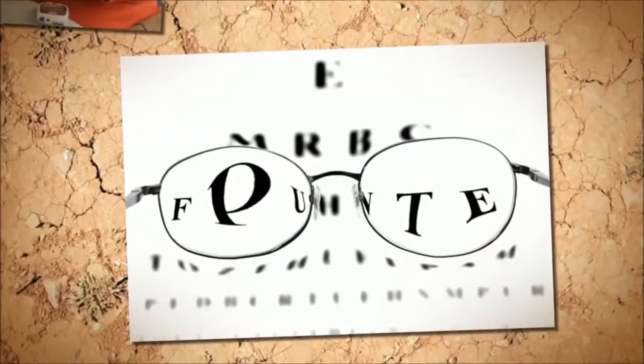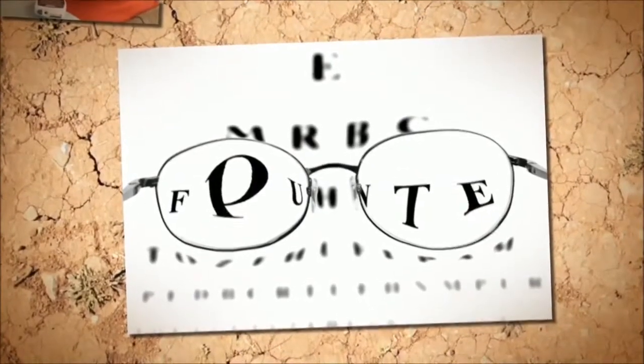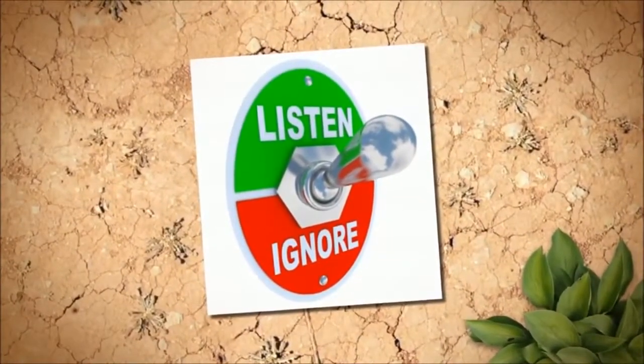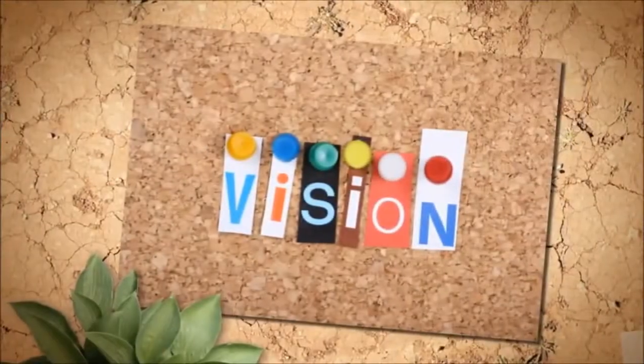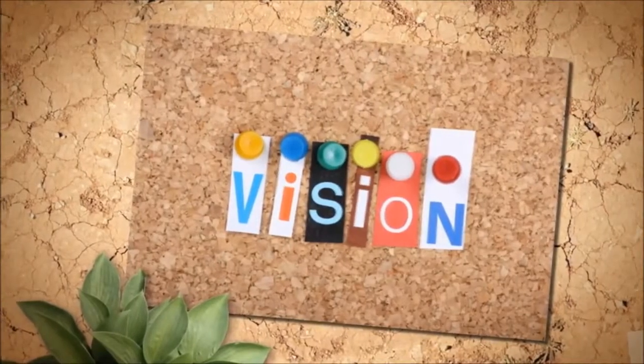The diabetes blurry vision symptom is one of ten symptoms of type 2 diabetes. Uncontrolled blood sugar can cause serious complications for your eyes. The most common diabetic eye disease is diabetic retinopathy. Many times there are no symptoms of this disease in the early stages — not even blurred vision — which is why it is important to have regular eye exams. Eye tests will reveal conditions such as retinopathy.